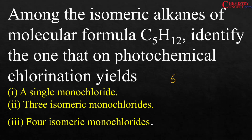This is NCERT in-text question 6.4. Among the isomeric alkanes of molecular formula C5H12, identify the one that on photochemical chlorination produces a single monochloride, three isomeric monochlorides, and four isomeric monochlorides.